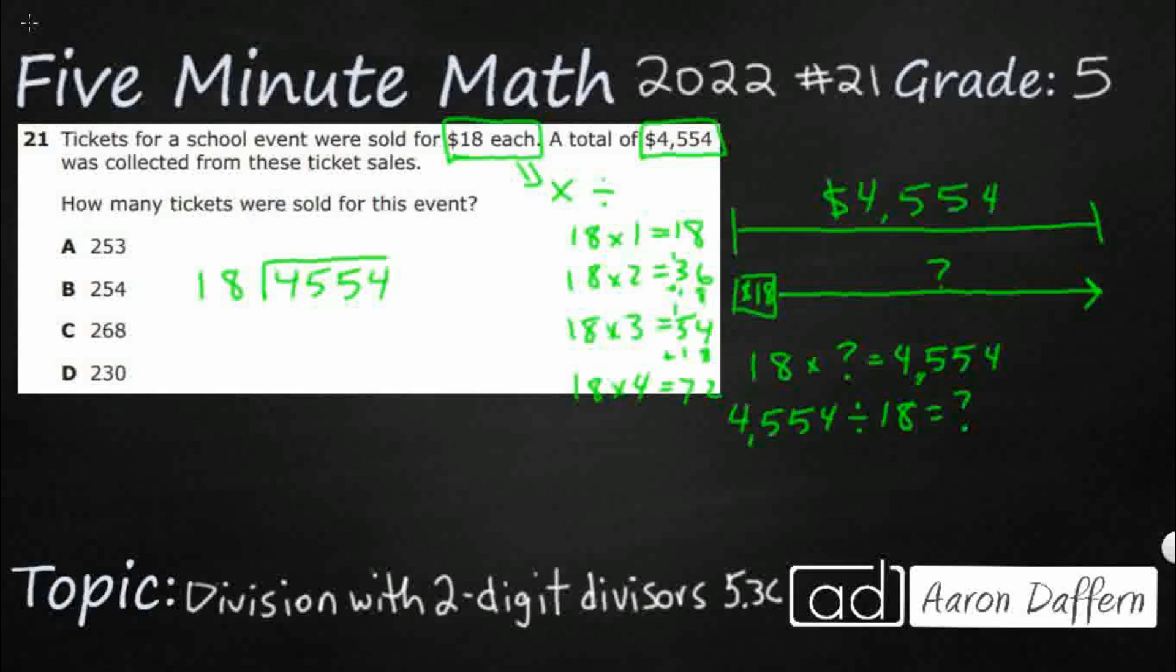So I'm just going to pretend like it's a regular division. Here's my divisor, and I look. Does 18 go into 4? No. Does 18 go into 45? Yes. And as we can see here, 18 is going to go into 45 twice. So I'm going to put my 2 right up there, and then I'm going to multiply.